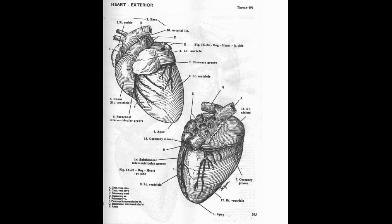The heart has two borders: the cranial border and the caudal border. The cranial border is completely formed by the right ventricle, while the caudal border is formed by the left ventricle.